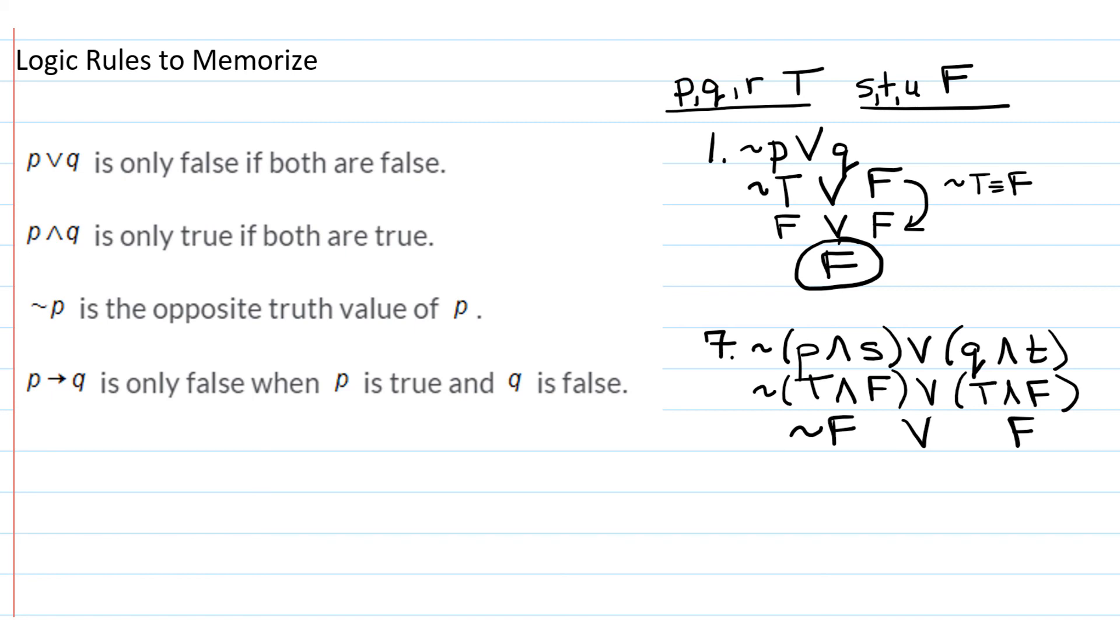Now we're going to have to apply which symbol next, the negation or the or? Well, the negation is only being applied to this false statement. So anytime you have the negation of an individual component, you have to do that before you do the adjacent operations. So the negation of false is the opposite of false, which is true. So that leaves us with true or false.